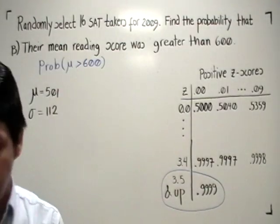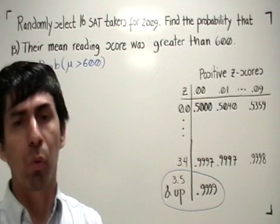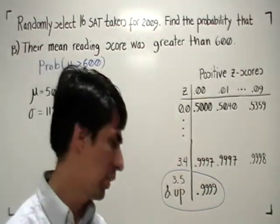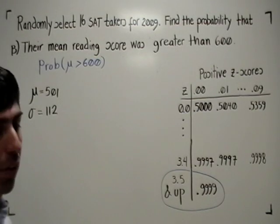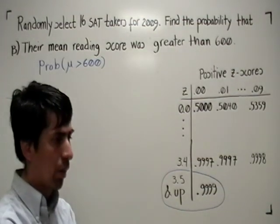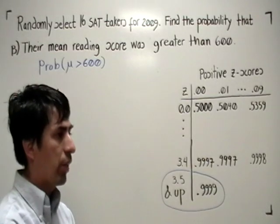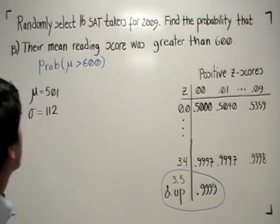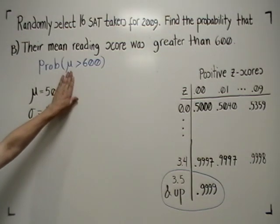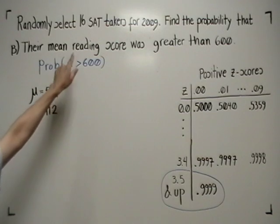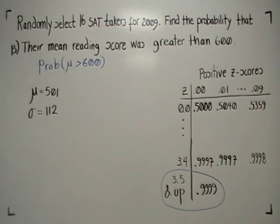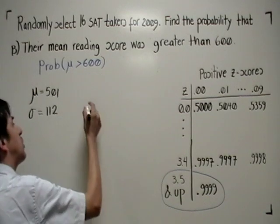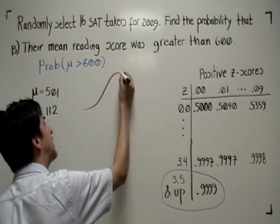In order to solve this problem, we bring forth the fact that SAT scores are normally distributed. So by the central limit theorem, the distribution of means, the distribution of the variable mu, where you're selecting samples of size 16 will be normally distributed. That's what the central limit theorem states.